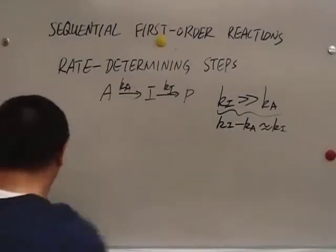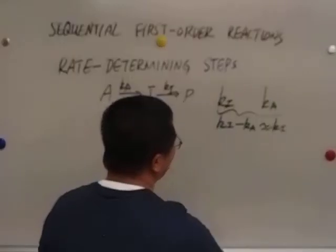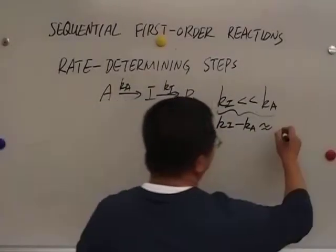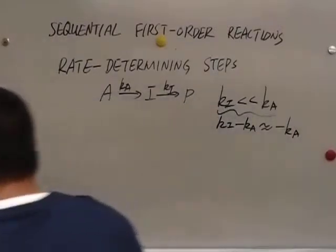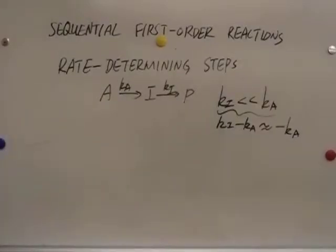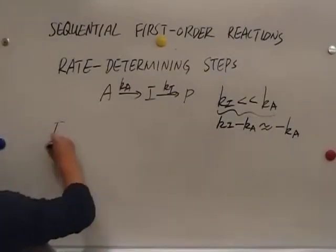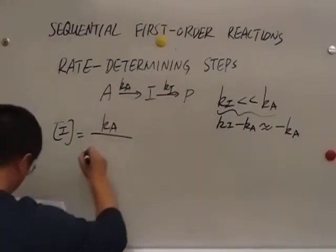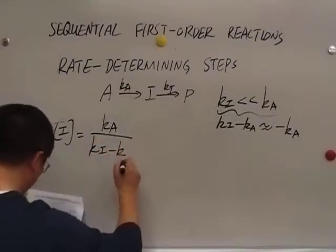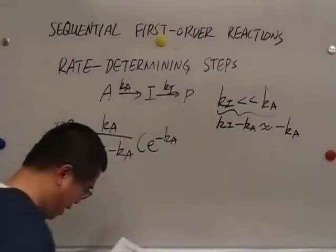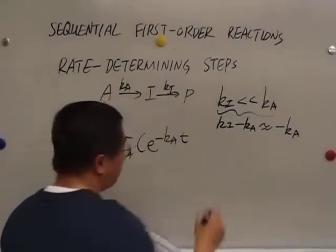Now we are going to assume Ki is much smaller than Ka. And if that's the case, Ki minus Ka is roughly negative Ka. This is an approximation. I'll give you the exact expression for I. It's complicated. We don't have to memorize this. If we need this, we can derive this by solving the differential equation of I.